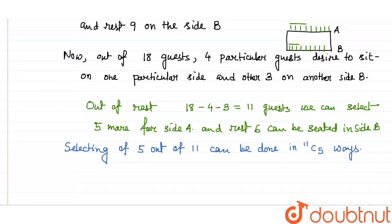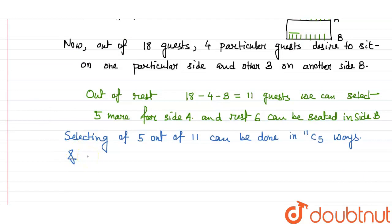And nine guests on each side of the table can be seated in how many ways? Nine on each side, so 9 factorial into 9 factorial ways.